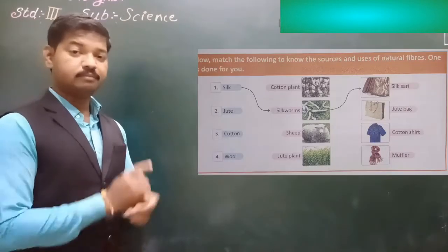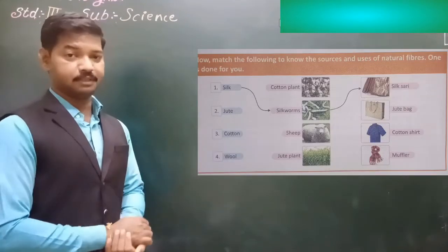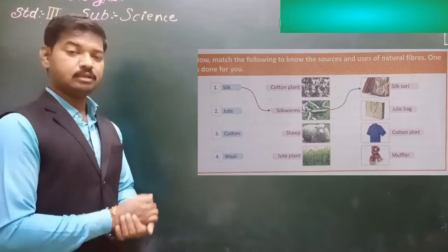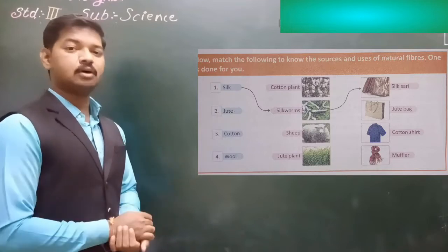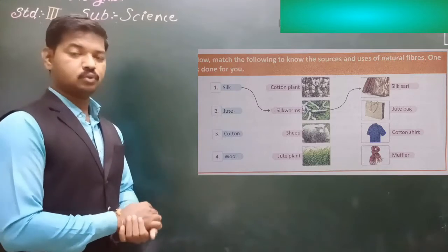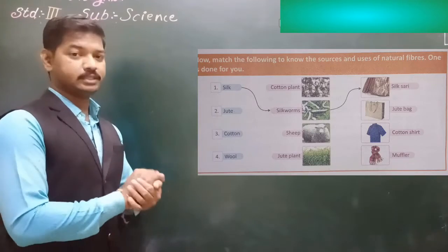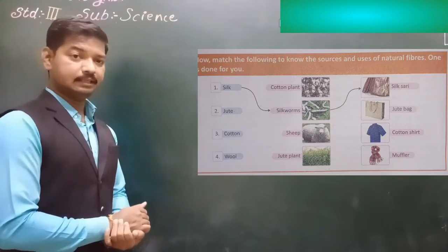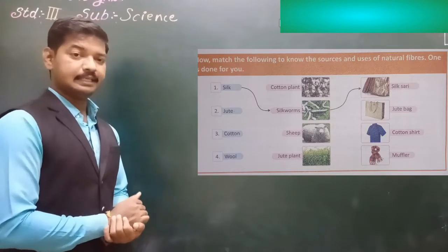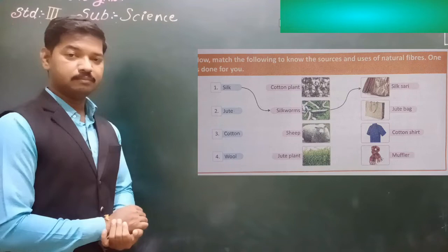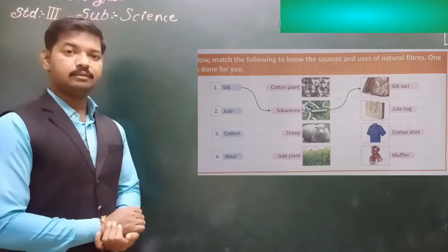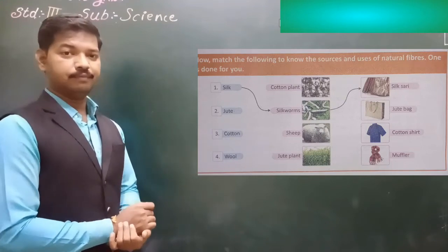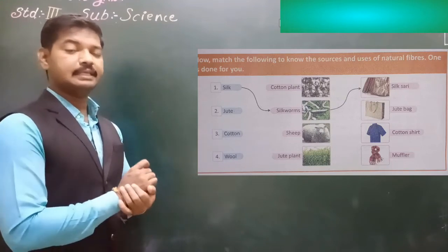See number 20 — in a box we have to match sources of natural fibers to their uses. So see number one: it is given as silk. Silk is matched with silk, and with the name of silk it is called silk.